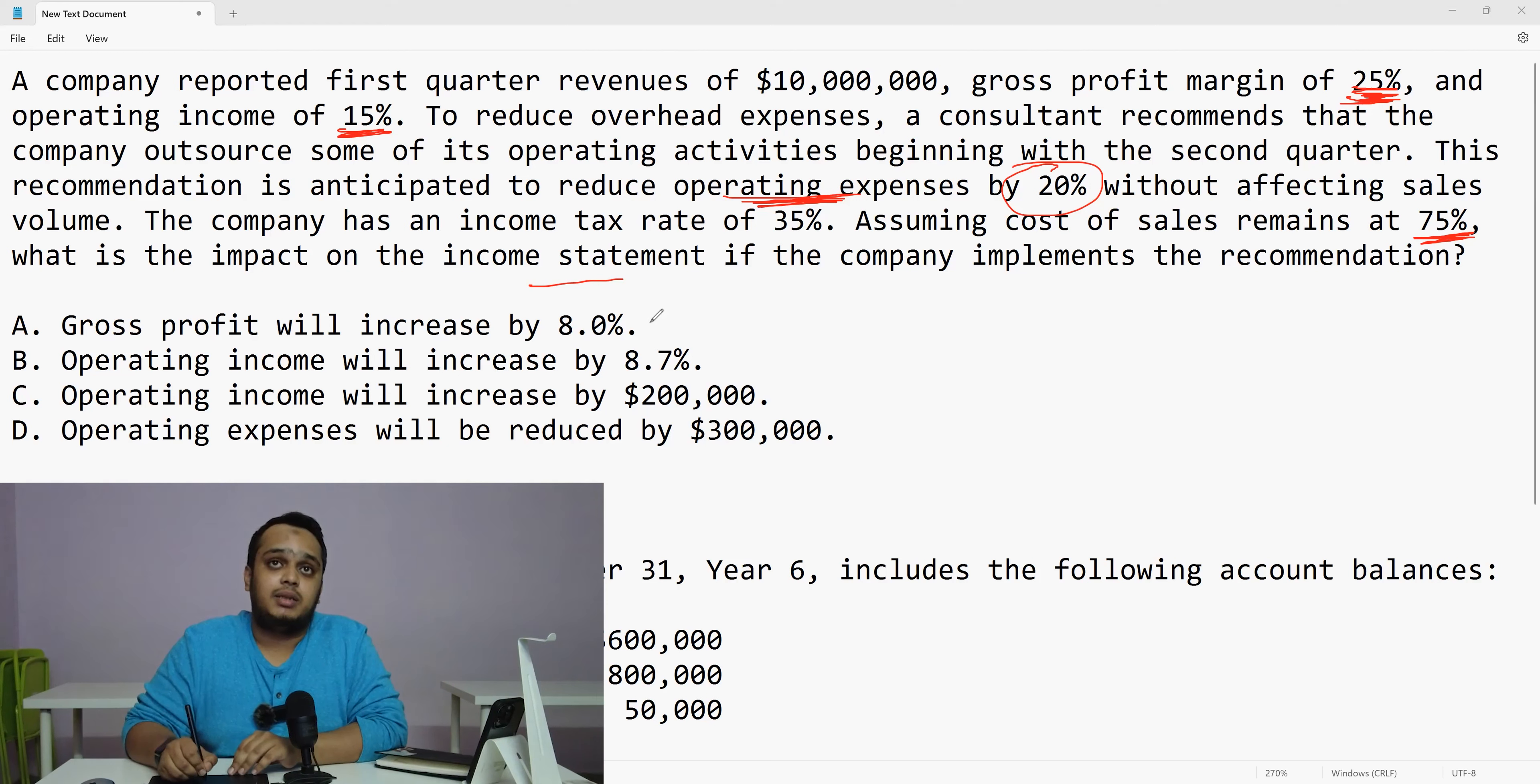And here, if you just see, the answer is given, the options are given in such a way. Gross profit will increase by 8%. Operating income will increase by 8.7%. Operating income will increase by 200,000. Operating expenses will reduce by 300,000. So the options itself, is like, you know, clumsy stuff. So it's like a real time great question for you guys. Great question to learn also. How do you solve this type of question?